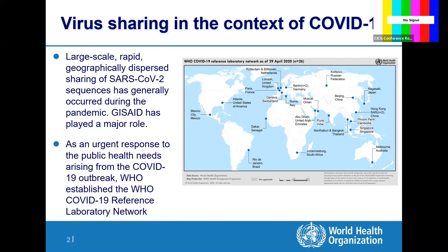What we saw was large-scale, rapid, geographically dispersed sharing of SARS-CoV-2 sequences — the genetic sequence data — generally occurring during the pandemic. The platform GISAID played a major role. However, the important point is that GISAID only exists for influenza and RSV, and was set up for SARS-CoV-2 specifically; this particular platform doesn't exist across all pathogens.